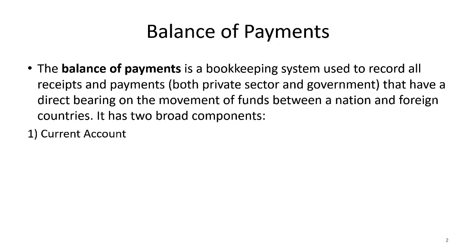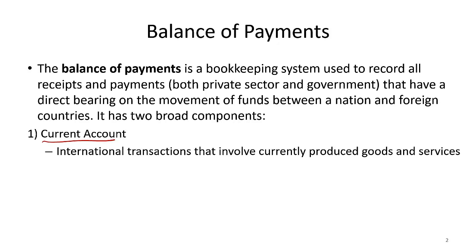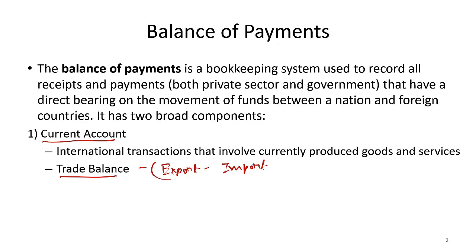The balance of payments has two broad components. The first is the current account. The current account includes international transactions that involve currently produced goods and services, which essentially means trade in goods and services. Anytime we buy goods from other countries or sell goods to other countries, that's part of the current account. One of the most observed components of the current account is the trade balance, which is export minus import — the difference between exports and imports.